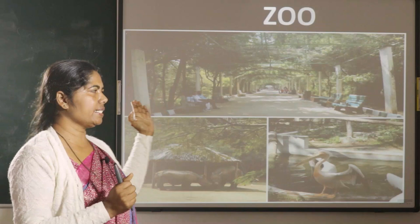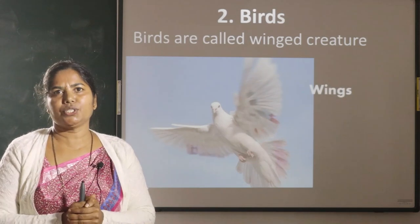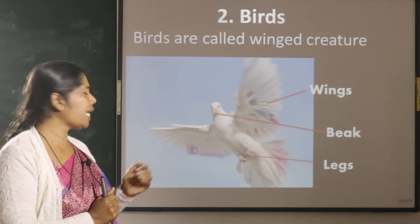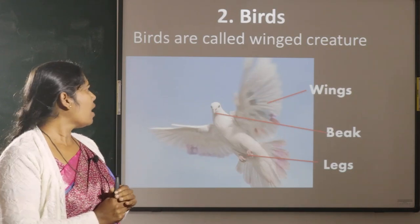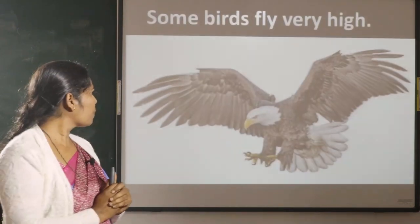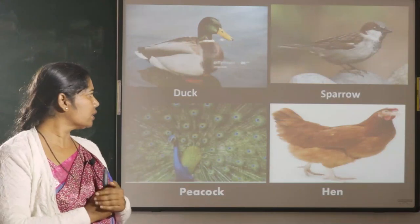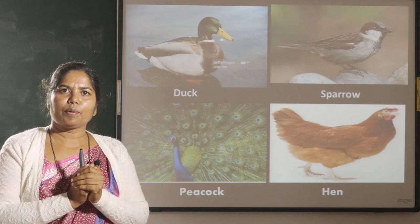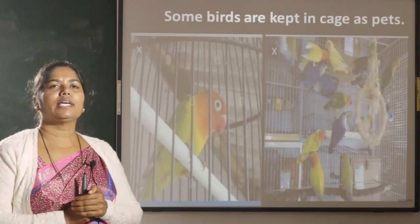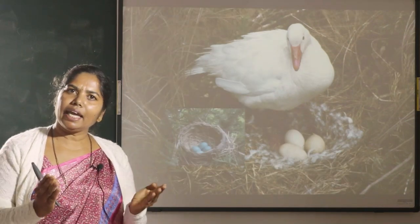Let us move to birds. Birds are called winged creatures. They have two wings, one beak and two legs. Some birds fly so high. Some birds hop on the ground. Duck, sparrow, peacock, hen — these are the birds. They eat grains and fruits. Some birds are kept in cages as pets. They build nests and they lay eggs also.